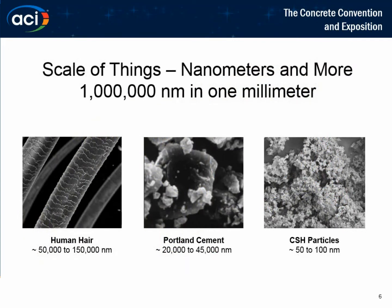To get a better understanding of just how small these particles are, it is best to compare them with other objects. There are 1 million nanometers in just 1 millimeter. ASTM defines nanotechnology as particles ranging from 1 to 100 nanometers in width. A human hair is about 100,000 nanometers in width. A cement grain is generally around 30,000 nanometers in width. These CSH particles are a mere 75 nanometers — so small they fit in between the cement grains and facilitate overall hydration and strength development.